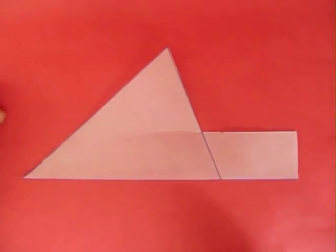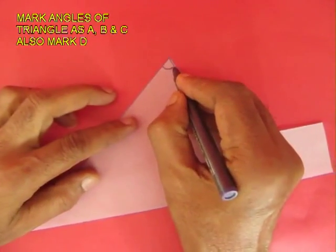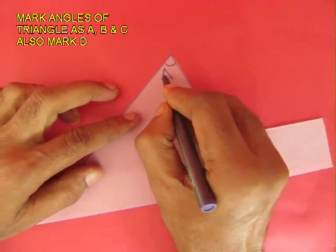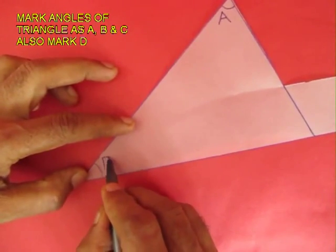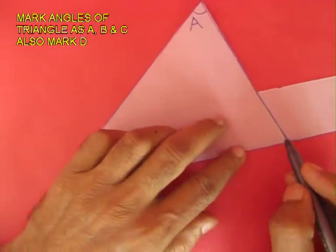From a tracing paper cut a triangle with an extended strip. The three angles of the triangle are A, B and C. Mark them.